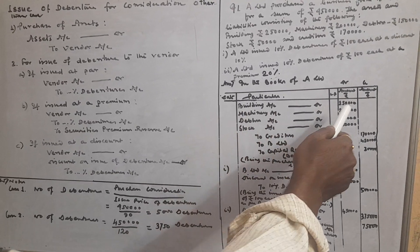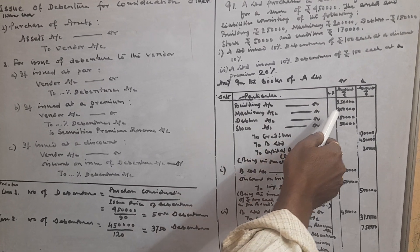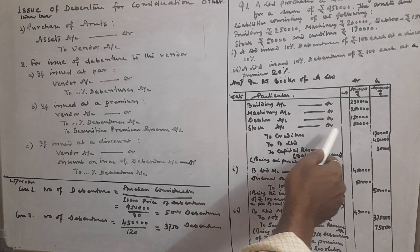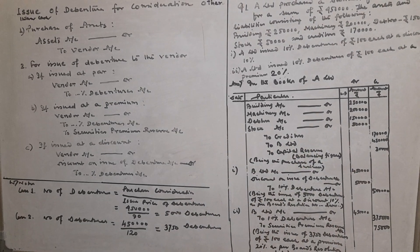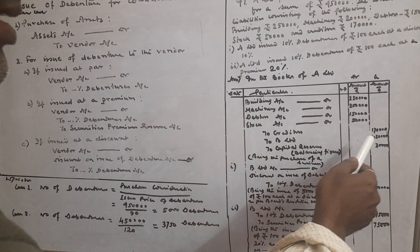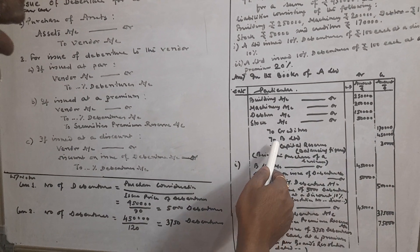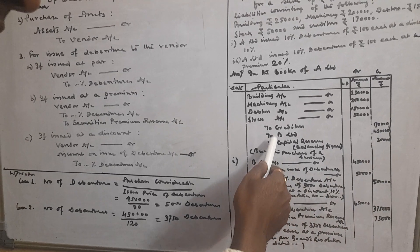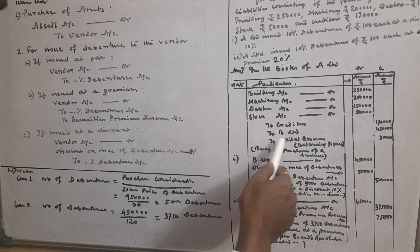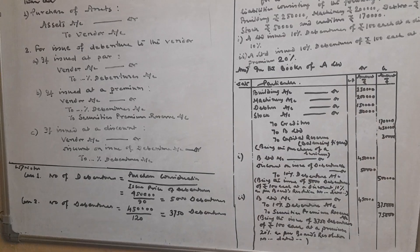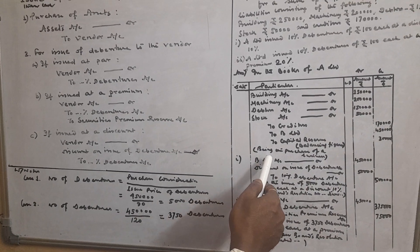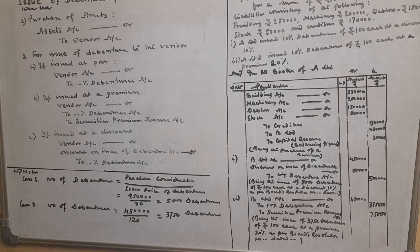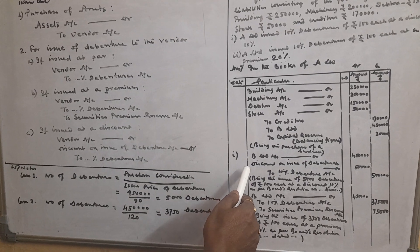The assets purchased are recorded as: Building Account debit 2 lakh 50 thousand, Machinery Account debit 2 lakh, Debtors Account debit 1 lakh 50 thousand, Stock Account debit 50 thousand, to Creditors 1 lakh 70 thousand, to B Limited 4 lakh 50 thousand — the balancing figure goes to Capital Reserve 30 thousand. Narration: Being the purchase of a business.